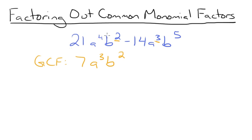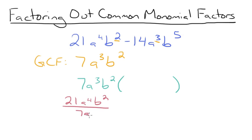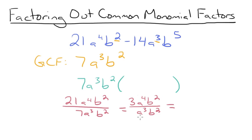Remember, we found the GCF of each of these sets of terms separately and then multiplied them together. So now we're going to factor out a 7a cubed b squared from both terms — 7a cubed b squared multiplied by what's going to be in our parentheses. We divide each term by our GCF. So 21a to the 4th b squared divided by 7a cubed b squared: 21 divided by 7 is 3, a to the 4th divided by a cubed is just a, and b squared terms cancel out. So this is simply equal to 3a.